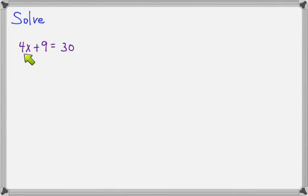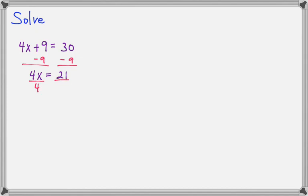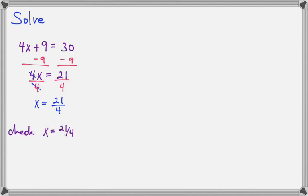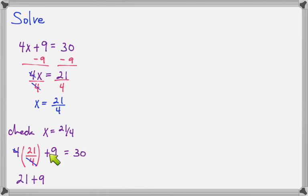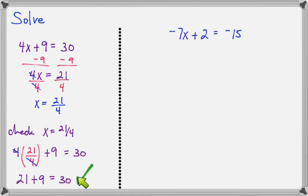A new example: 4x plus 9 equals 30. The first thing we need to do is get rid of the 9. We'll subtract 9 from both sides. That will leave us with 4x equals 21. Divide both sides by 4, and we get x equals 21 over 4. Since 21 over 4 won't reduce, we are simply going to leave it in fraction form, which is fine. We can still check it: put 21 over 4 in the place of x. 4 times 21 over 4 — the 4s will cancel — leaves us with 21 plus 9, and 21 plus 9 really is 30, so that one is correct.